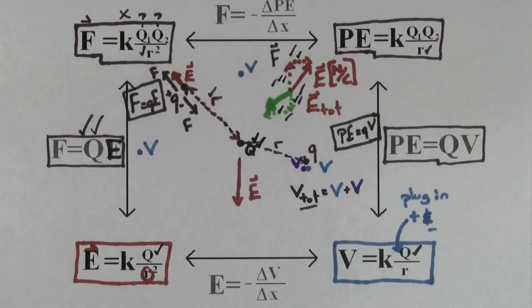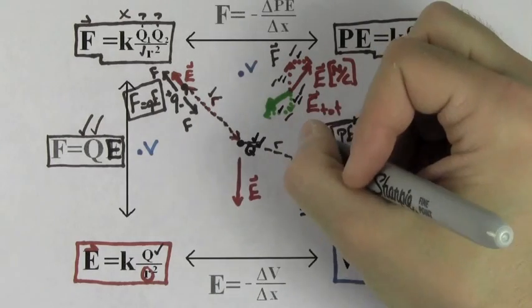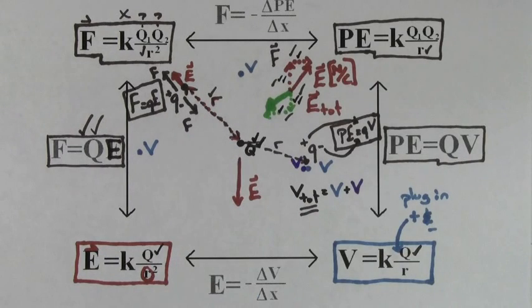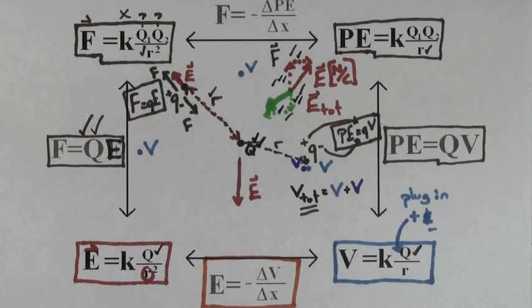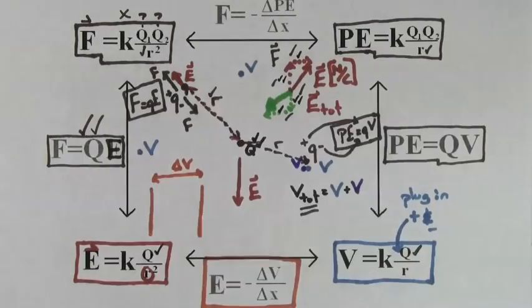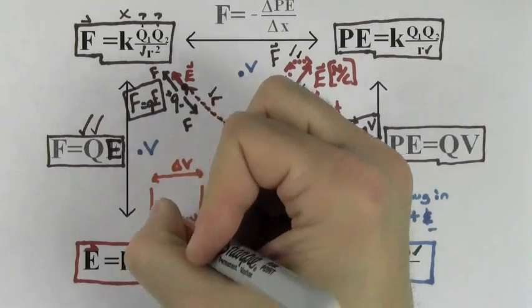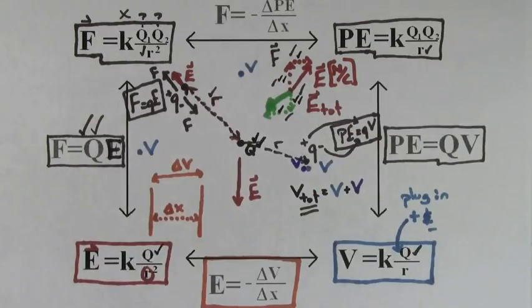Since you're dealing with electric potential, you do plug in the positive and negative signs for the charge. The formula that relates the electric field to the electric potential is E equals negative delta V over delta X. In other words, if you take the electric potential difference between two points in space — the voltage — and divide that by the distance between those two points in space, you'll get the size of the electric field.